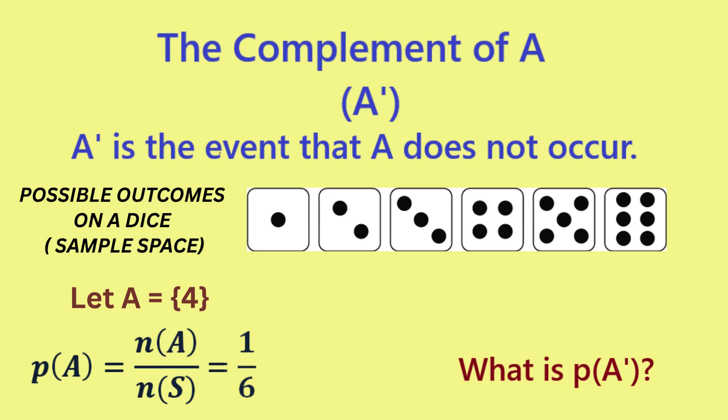Now, suppose we wish to know the probability of A complement. A complement will be the set of numbers that are not 4. That's a total of 5 numbers. So, the probability of A complement is 5 sixths,